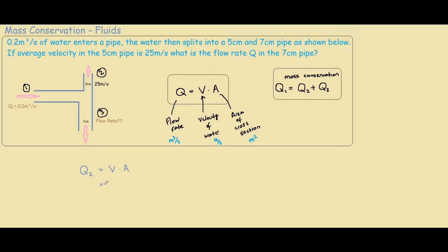Velocity is 25 meters per second. And since area is a pipe cross section, it will be pi r squared over 4.